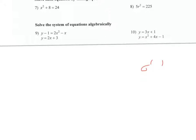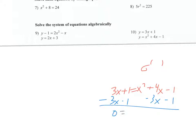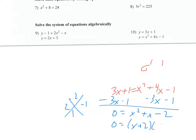Next we'll solve this system algebraically using substitution. I swap in the isolated expression, giving 3x plus one equals x squared plus 4x minus one. Moving everything to one side gives zero equals x squared plus x minus two. Two numbers that multiply to negative two and add to one are positive two and negative one. Since there's no coefficient on x squared, I can factor directly as x plus two times x minus one. Setting each equal to zero gives x equals negative two and x equals one.